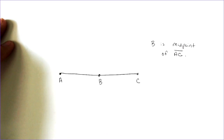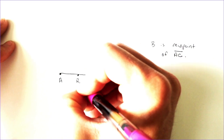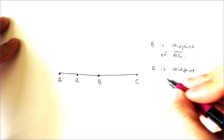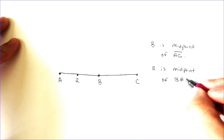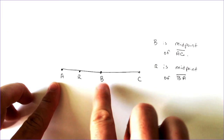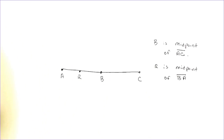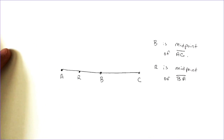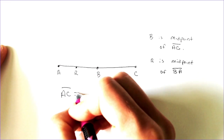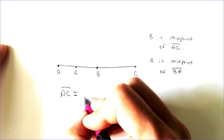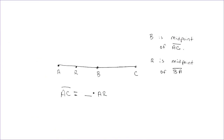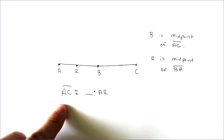Nothing new there. But I'm now going to add an extra point, point R, and R is also a special point — R is the midpoint of A to B, or BA. Both are effective. So R is perfectly in between A and B, and B is perfectly in between A and C. There are a lot of equal things here that you could do hash marks for. What I want to know is: if I know the whole thing AC, what would I have to multiply AR by to equal the entire thing?